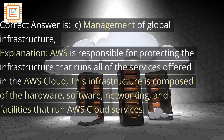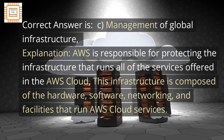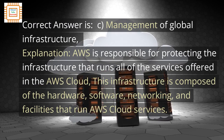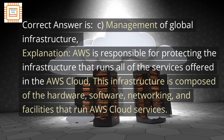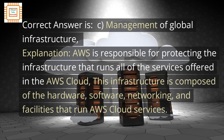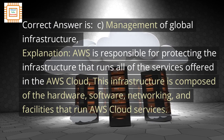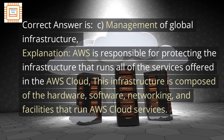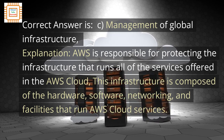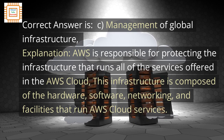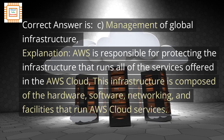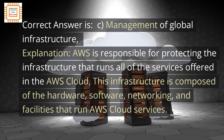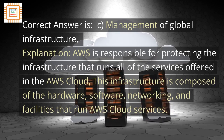The correct answer is C: Management of Global Infrastructure. AWS is responsible for protecting the infrastructure that runs all of the services offered in the AWS cloud. This infrastructure is composed of the hardware, software, networking, and facilities that run AWS cloud services.